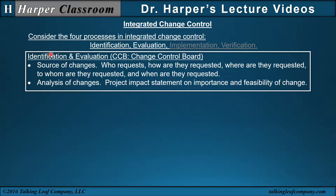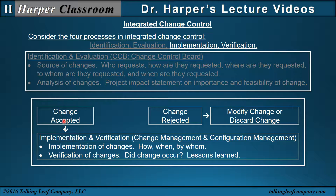Starting with identification and evaluation, the change control board decides the source of changes: who requests the change, how, where, to whom, and when they are requested. An analysis of changes focuses on the project impact statement — the importance and feasibility of change. If a change is accepted, then implementation and verification follow, which includes change management and configuration management. This covers how changes are implemented, when and by whom, and — most importantly — verification: did the change actually occur, what are the lessons learned, and how effective was it?